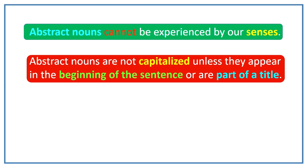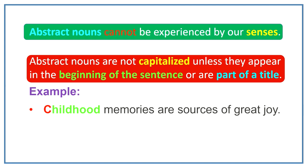Abstract nouns are not capitalized unless they appear in the beginning of the sentence or are part of a title. For example, childhood memories are sources of great joy. His childhood was passed in dire poverty. Here in the first sentence you can see that the abstract noun childhood appeared in the beginning of sentence so it is capitalized, but in the second sentence it is not capitalized as it appeared in middle of sentence.